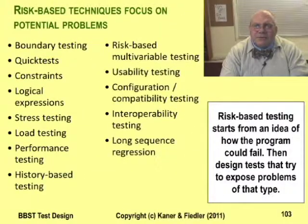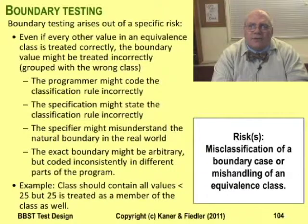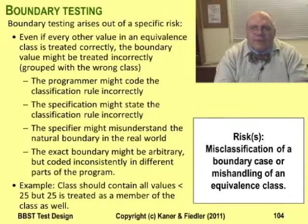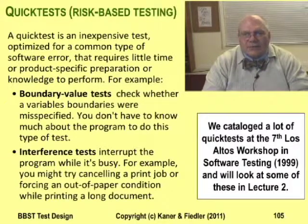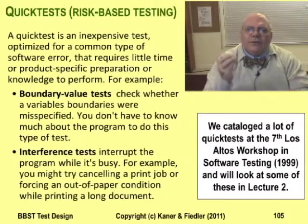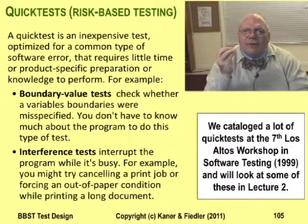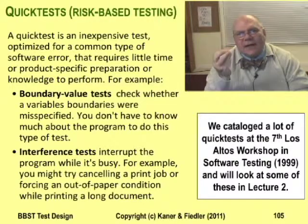We'll focus on risk-based testing in the next lecture. All risk-based tests are focused on ways the program can fail. Boundary tests are focused on the mishandling of boundary values — for example, the program might accept values less than or equal to 5 when it's supposed to accept just values less than 5. One of the things that's special about quick tests is that you can run them when you start testing a product before you understand it well. Quick tests are designed around programming errors that are common, so common that you can easily imagine how to test for that kind of bug even though you don't know the program yet.